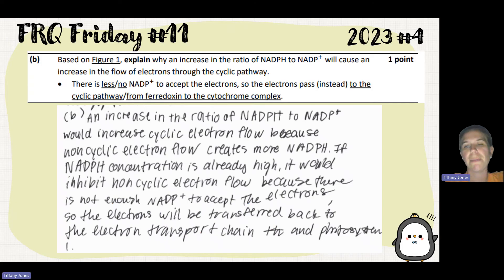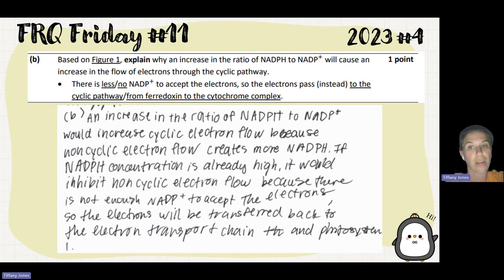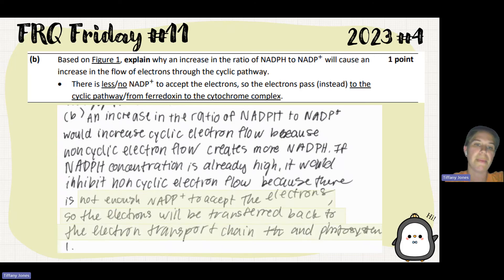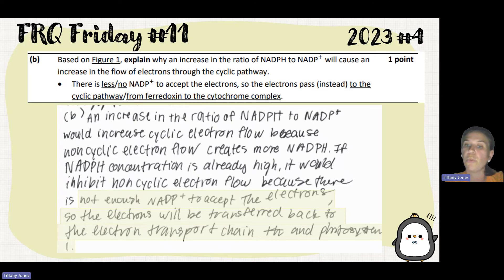The student says: An increase in the ratio of NADPH to NADP+ would increase cyclic electron flow because non-cyclic electron flow creates more NADPH. If the concentration is already high, it would inhibit non-cyclic electron flow because there is not enough NADP+ to accept the electrons, so electrons will be transferred back to the electron transport chain and photosystem 1.